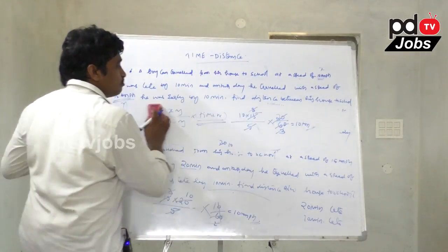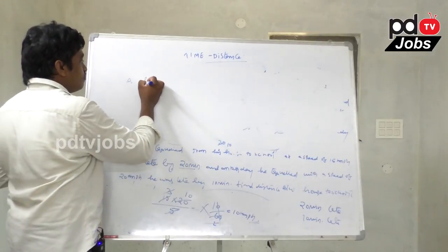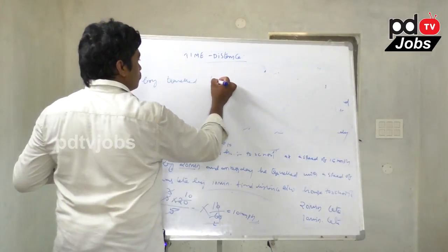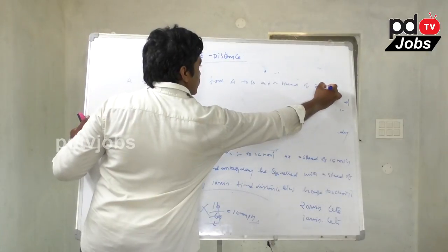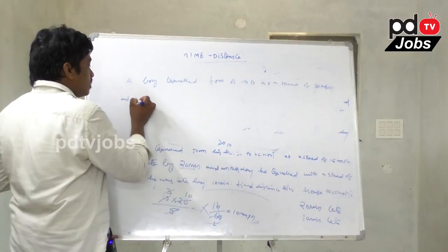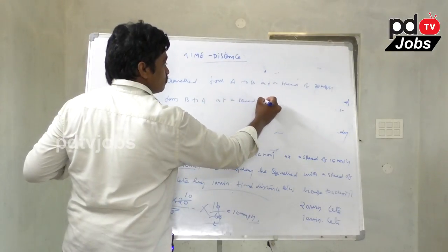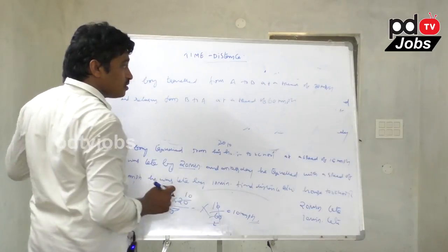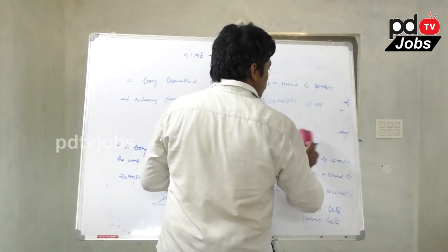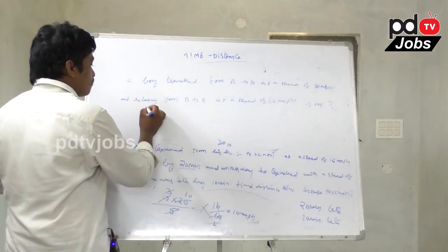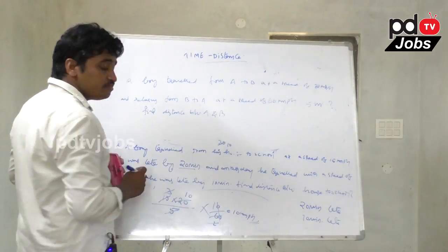One more example. A boy travelled from A to B at a speed of 30 kmph, and returns from B to A at a speed of 60 kmph. The total time taken by him is 5 hours. Find the distance between A and B.